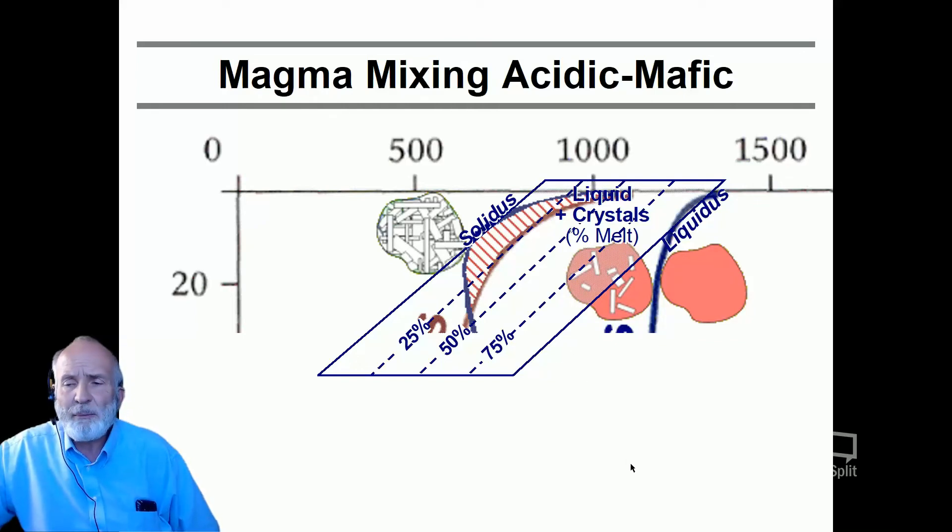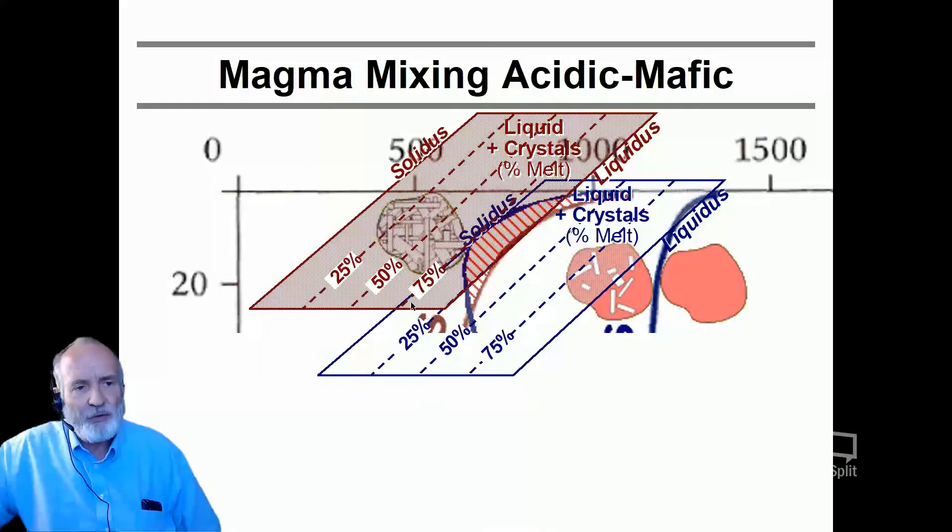If I now superimpose the same on the same chart for my acidic rocks, we generate a field of overlap. When the mafic material has only 25% melt left, my acidic material actually starts its first crystal growth. When we have 75% melt in the acidic material, we already almost have only 1% or so of melt left in the mafic materials. So there's a little overlap.